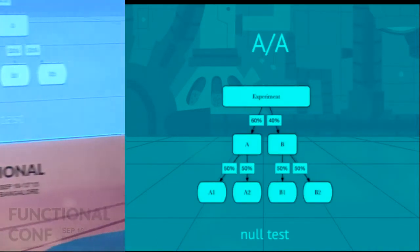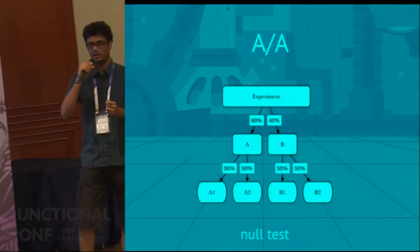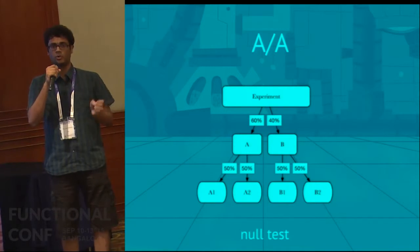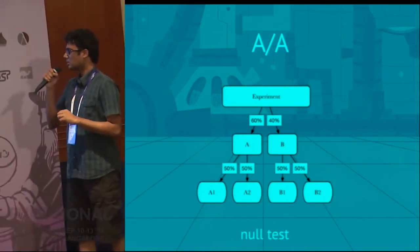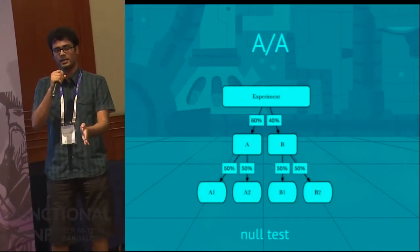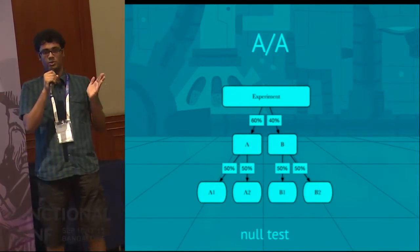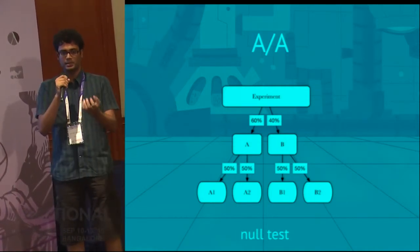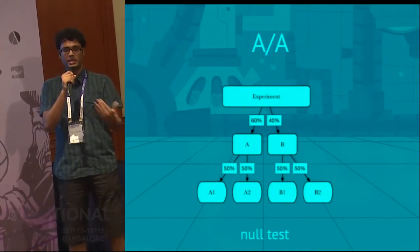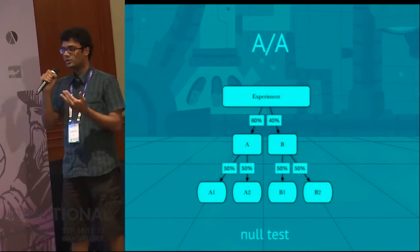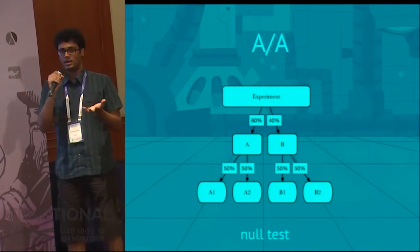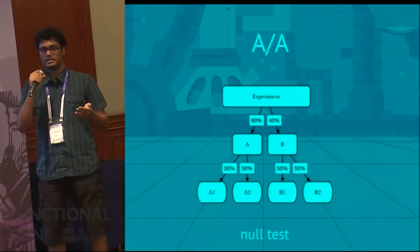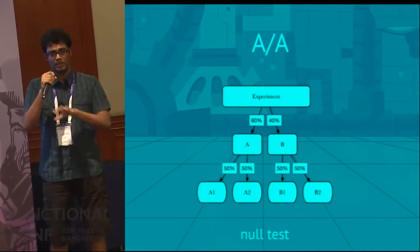Another vital feature of any experimentation platform is the AA test, which is a null test. It helps you remove the possibility of the null hypothesis by comparing a treatment against itself — you divide an A bucket into A1 and A2, which is the same traffic but split. This helps ensure that the treatment is responsible for your measurements and not just randomness. When reports on A1 and A2 are similar, you know you've attained statistical significance in the traffic. It also helps test that the experimentation platform itself has no bias in how it's bucketing users.